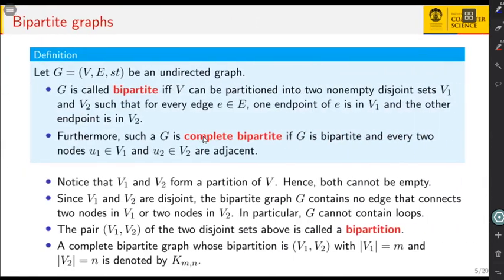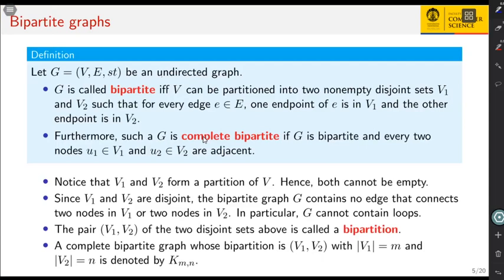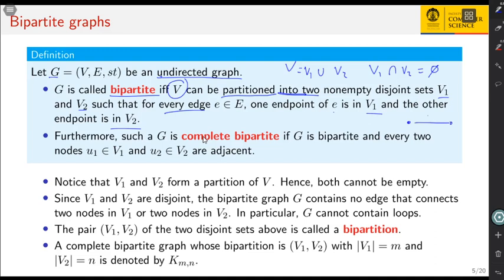An undirected graph G is bipartite if and only if the set of nodes V can be partitioned into two sets V1 and V2, so that V equals V1 union V2, and V1 intersection V2 is empty. The other condition is that every edge in E has one endpoint in V1 and the other endpoint in V2. So for each edge, one endpoint must be in V1 and the other must be in V2.